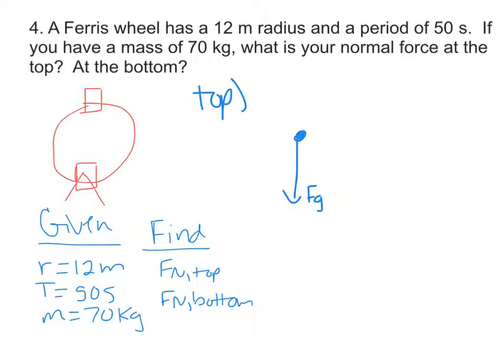When you were at the top of the Ferris wheel, the center of the circle is directed downwards. So because acceleration also has to be directed towards the center and down, your Fg is going to have to be longer than your Fn. So at the top of the Ferris wheel, we have a longer Fg and a shorter Fn.